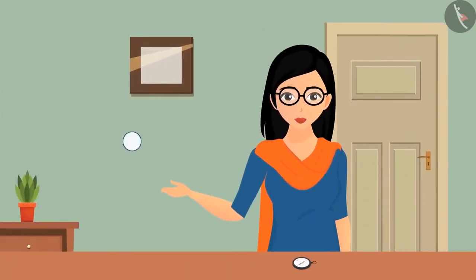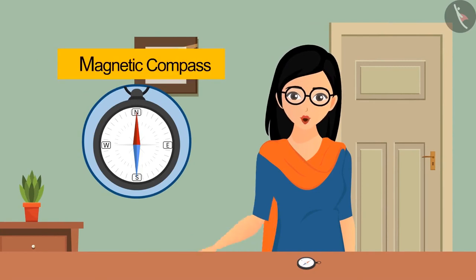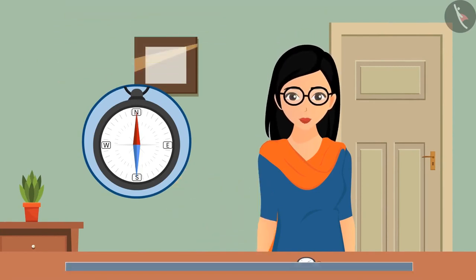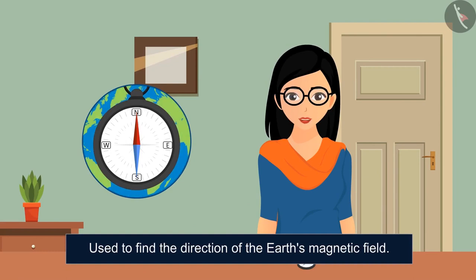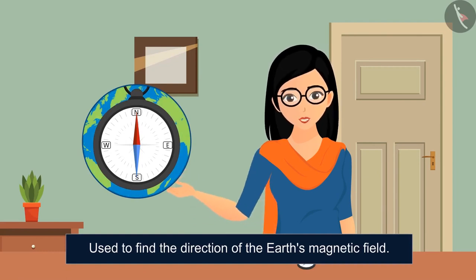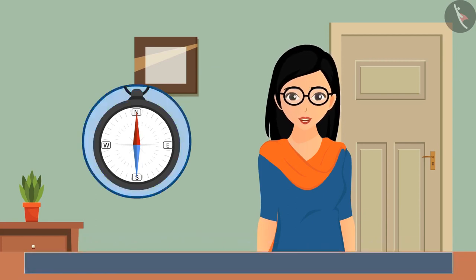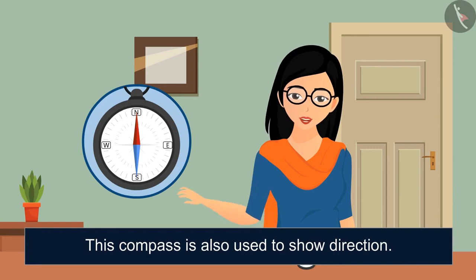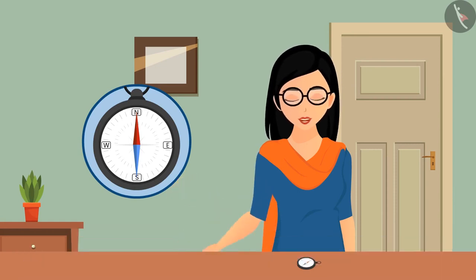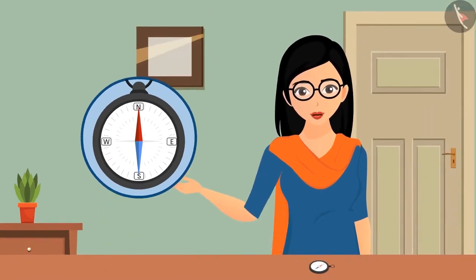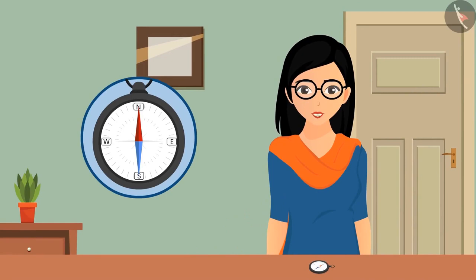First, we need to know about a small round-looking device called a magnetic compass, which is used to find the direction of Earth's magnetic field. Our Earth also acts like a big magnet. The needle of this compass is just like an ordinary magnet with north and south poles. The north pole is marked with red color, and the needle points towards the geographical north pole.